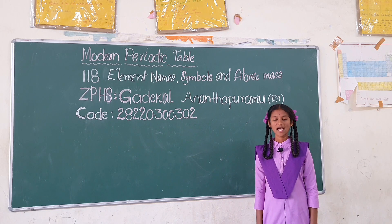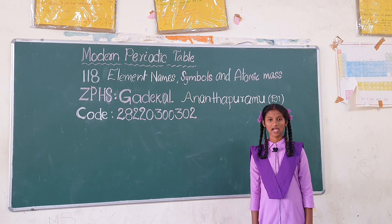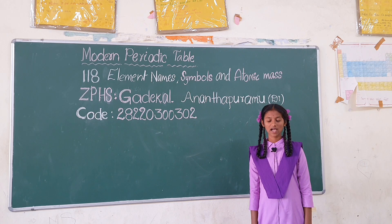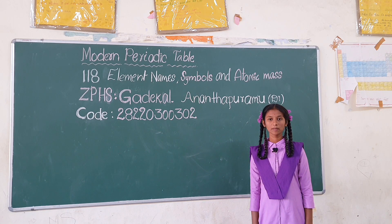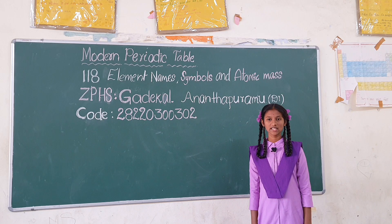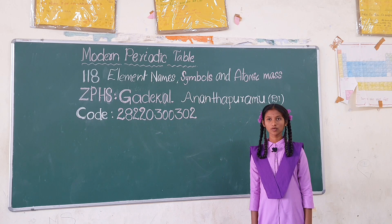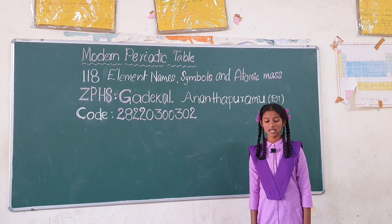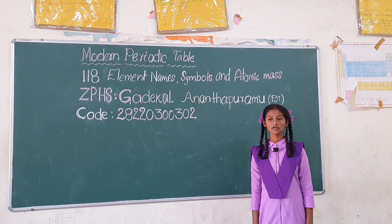Polonium Po 209, Astatine At 210, Radon Rn 222, Francium Fr 223, Radium Ra 226, Actinium Ac 227, Thorium Th 232, Protactinium Pa 231, Uranium U 238, Neptunium Np 237, Plutonium Pu 244, Americium Am 243, Curium Cm 247, Berkelium Bk 247, Californium Cf 251.